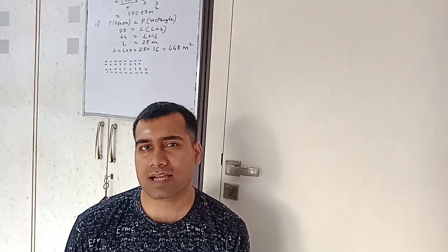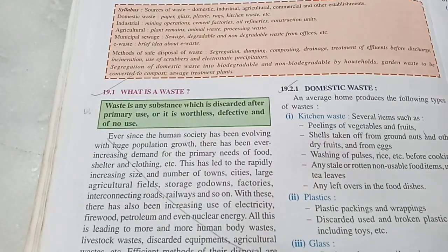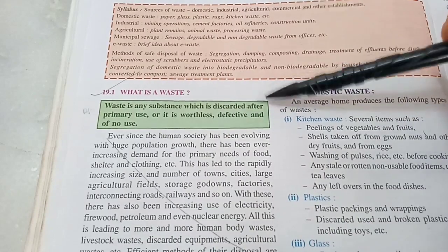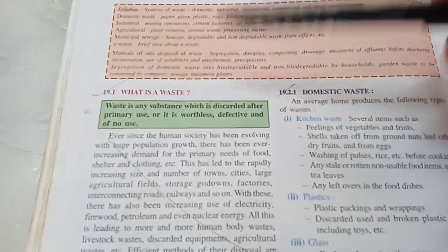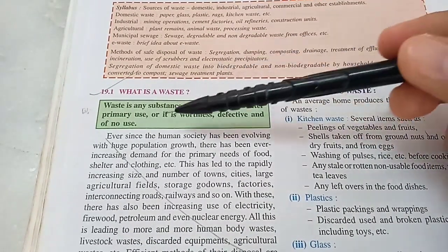Let's study 9th Standard ICSE Biology Chapter 19: Waste Generation and Management. Waste is any substance which is discarded after primary use, or it is worthless, defective and of no use.